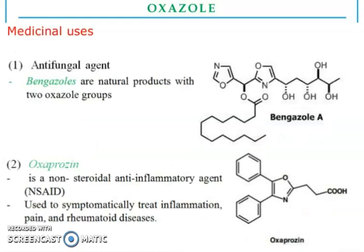Now, medicinal use. Anti-fungal agent: benzoxazoles are natural products with the oxazole ring. Oxaprozin is a non-steroidal anti-inflammatory agent used to treat inflammation, pain, and rheumatoid disease, and this oxaprozin contains an oxazole ring.